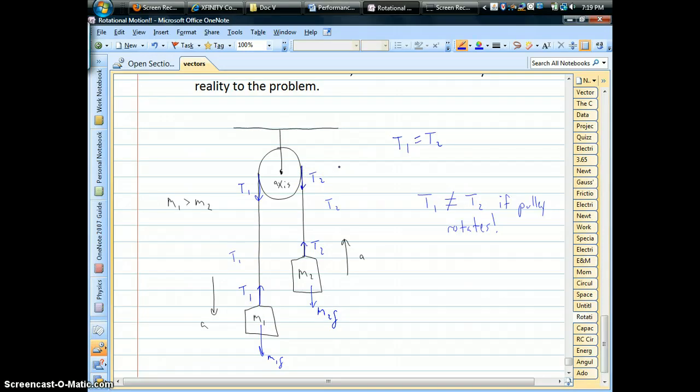Those are both causing torques, trying to make the pulley spin in either direction. Now, if T1 is equal to T2, there is no net torque, and the pulley doesn't spin. There's only one tension value in the entire rope.